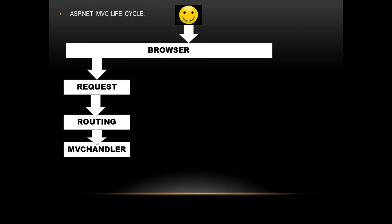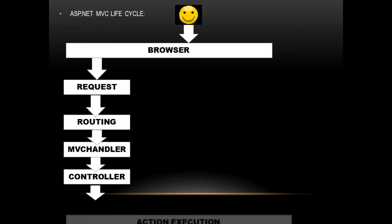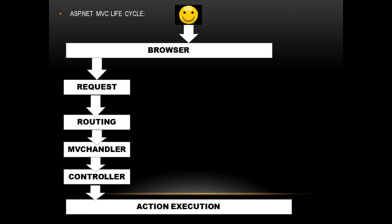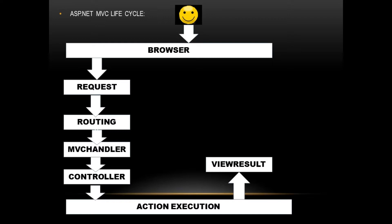After that, it sends a command to the MVC handler. The MVC handler will handle this pattern and create the controller instance. This controller instance is then passed to the controller, which finds the correct action to execute. After the correct action gets executed, it sends a result to the view result.